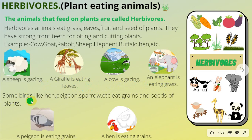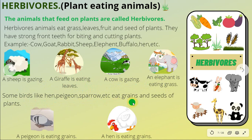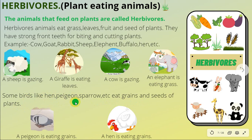Some birds like hen, pigeon, and sparrow eat grains and seeds of plants. These are also examples of herbivorous animals.